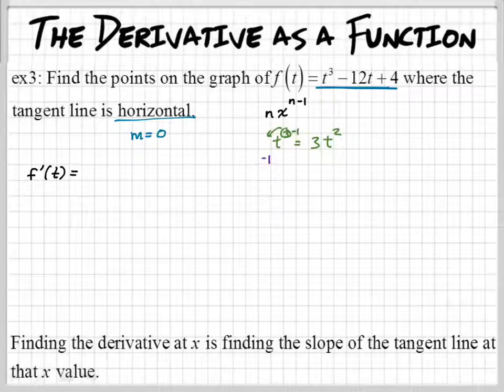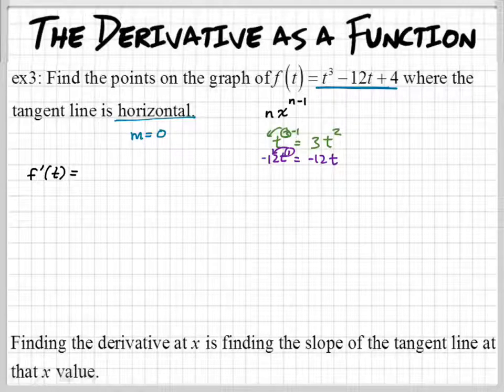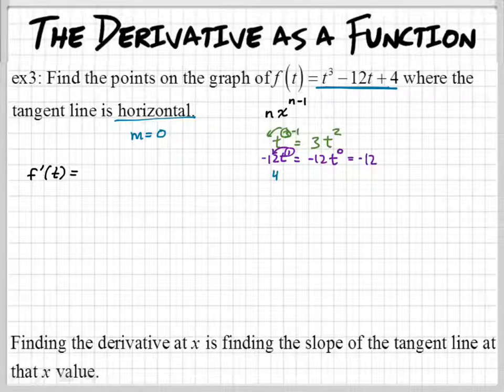So, now we have a negative 12t. Now, what exponent does that t have right there? It has a one. So, if I take that one and drop him, that would be one times negative 12, which would be negative 12. And then we have t to the what? Zero. To the zero. And what is t to the zero? One. That's one. So, this is just negative 12. And then the last one, you'll get really fast.